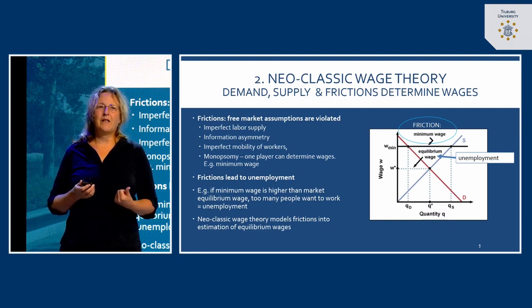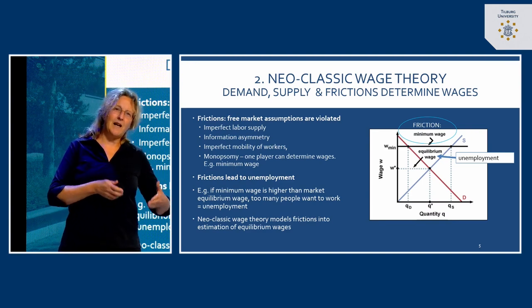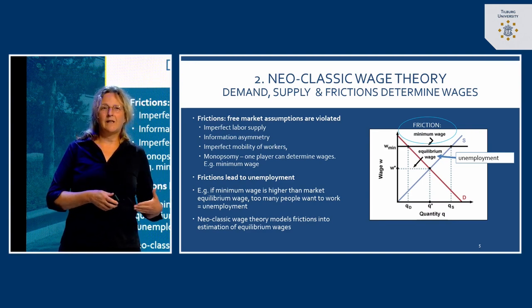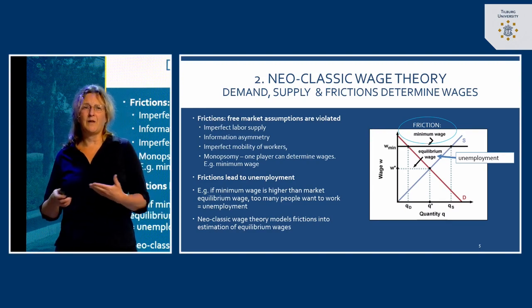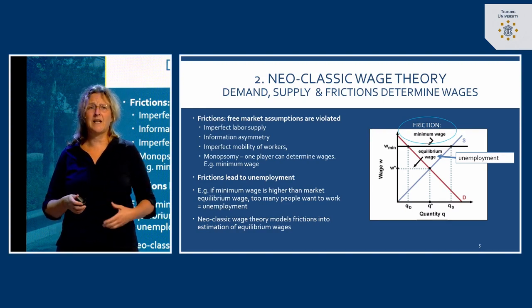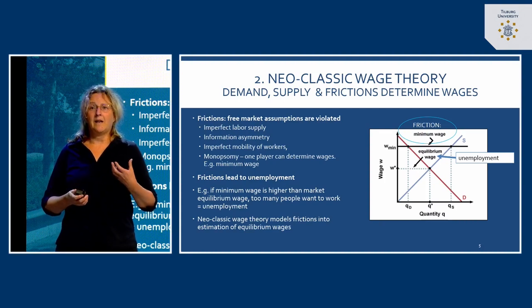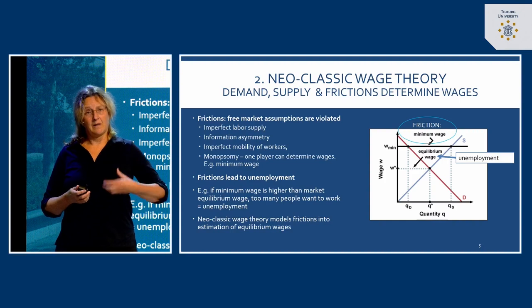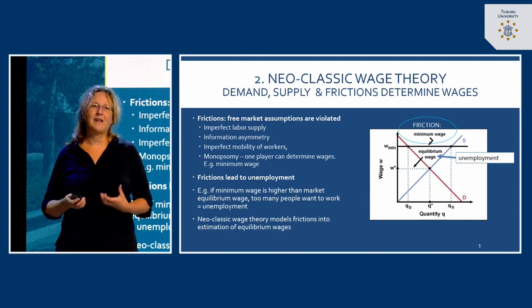Scrolling over a few assumptions that lead to frictions: first, there is an imperfect labor supply. Within classical wage theory it's assumed that everybody could do all jobs — but that's not true. There are specialists, people educated for specific jobs, and as discussed previously, there are mismatches between what employees offer and what organizations need. So there's not a perfect labor supply at all times.